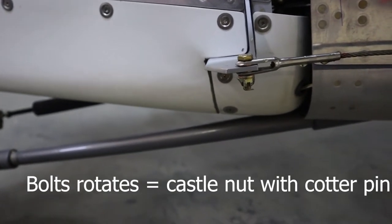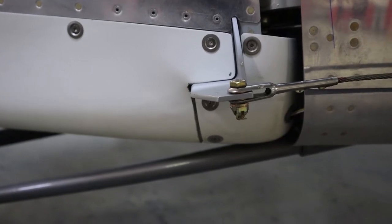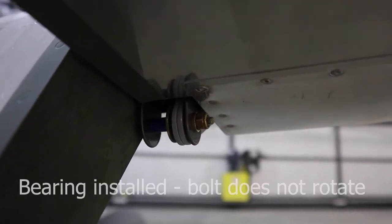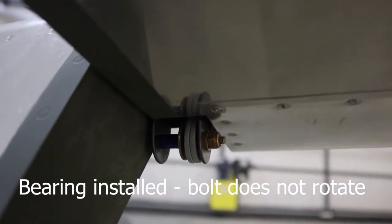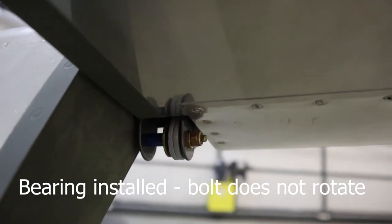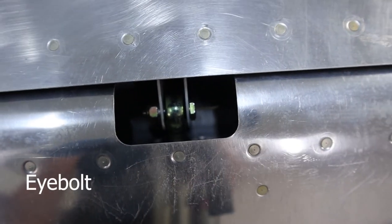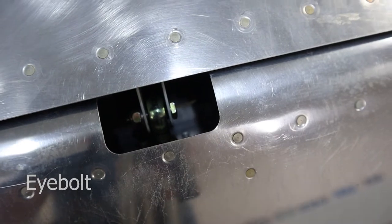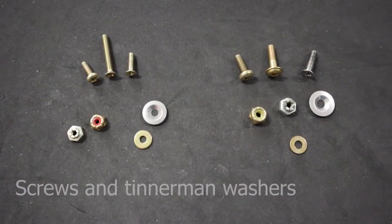So where do we apply these? Well, anywhere where the bolt actually rotates, we're going to use a castle nut and a cotter pin, so you see here on the rudder of the aircraft. And then the other places, the control surfaces have bearings, so the bolt does not rotate. Here's the elevator, the bolt will not rotate, the bearing inside or the control end bearing will rotate instead.